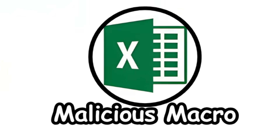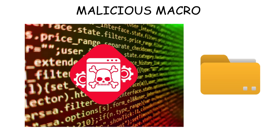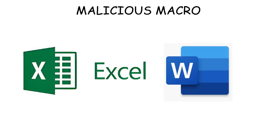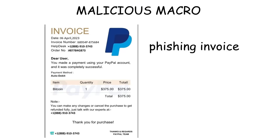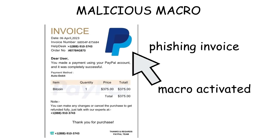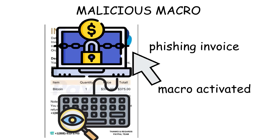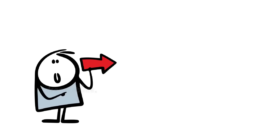A malicious macro is a harmful script embedded in documents, often Microsoft Word or Excel files, that runs when macros are enabled. Macros are normally used for automating tasks, but hackers exploit them by hiding malware inside. Victims usually receive these infected files through phishing invoices or official reports. Once opened and macros are enabled, it downloads additional malware like ransomware or keyloggers.